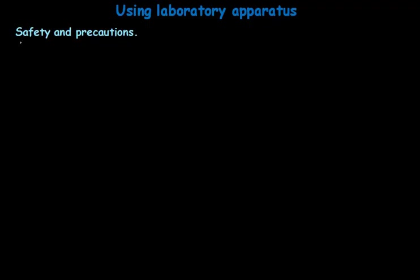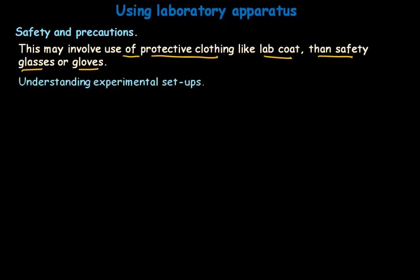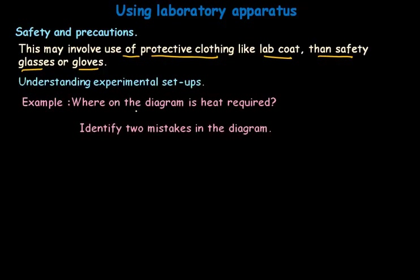Along with knowing the names, we should also know the safety measures to be used with these apparatus. This may involve protective items like lab coat, safety glasses, gloves, etc. We should also be able to understand experimental setups. For example, a question may ask where on the diagram heat is required — you may label it with an arrow and write 'heat'.